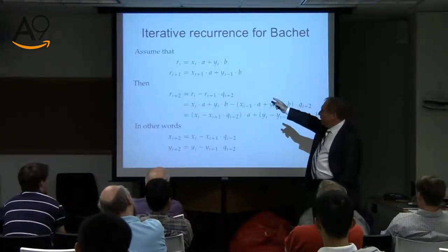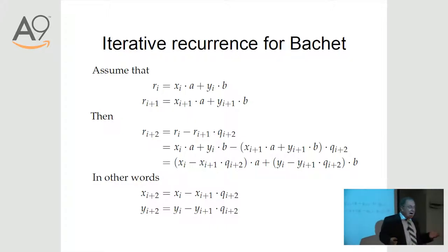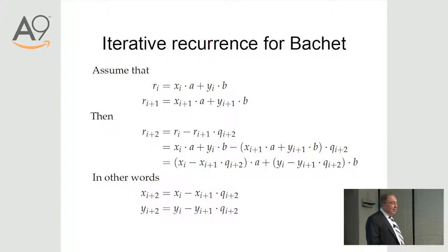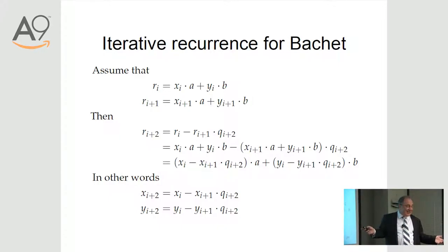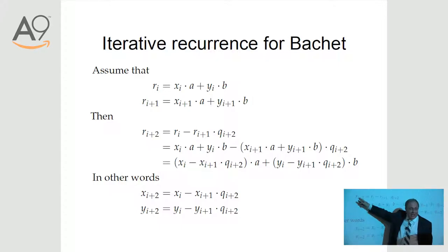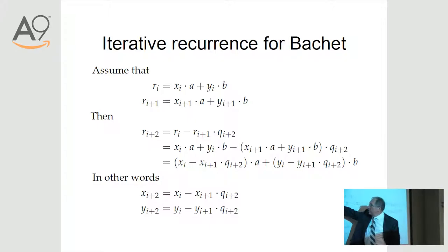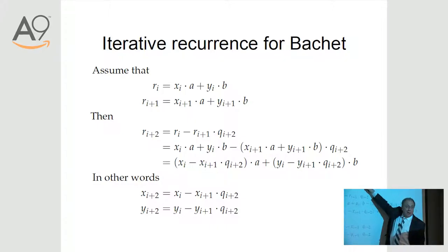Let us assume that we know two remainders, R sub i and R sub i plus 1, and we've already figured out how to represent them as a linear combination. We're doing the inductive step. We could assume that. And if we do that, then we know that R sub i plus 2 — the next R — is equal to this. That's from just the rewrite. Remember, we have this formula, and then we just plug these guys in.